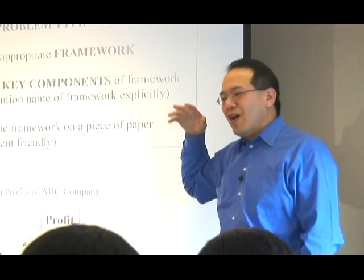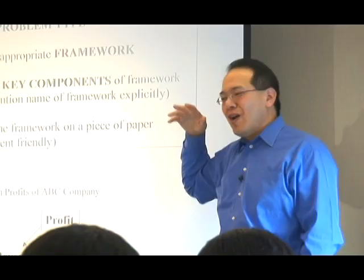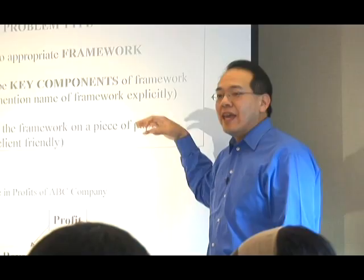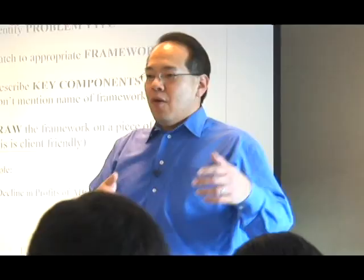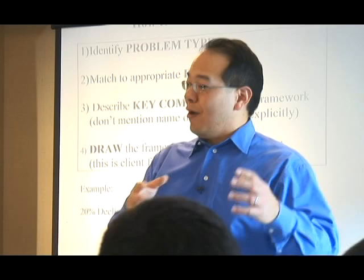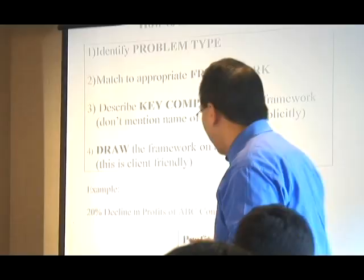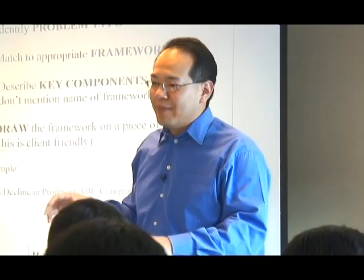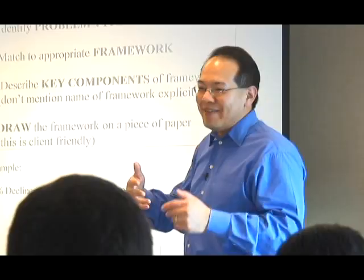Find the problem type, then pick the right framework. Because if you pick the wrong framework, you start gathering data in the wrong places — it wastes time more than anything else. Once you have a framework, identify its key components. For example, for a profit problem: revenues minus costs equals profits. So to understand why profits are down 20%, we need to look at revenues and costs. Also — you don't want to mention the actual framework by name. Don't say 'that's a mergers and acquisitions framework problem' or 'that's a Porter's Five Forces problem.' Just use the framework. It makes you look smarter — like it came out of your head.